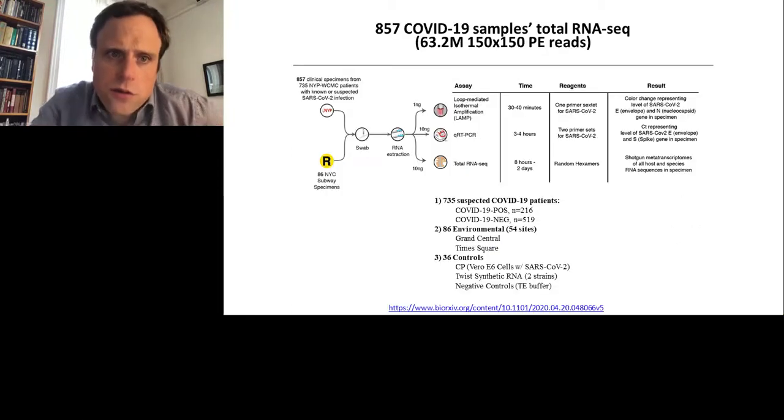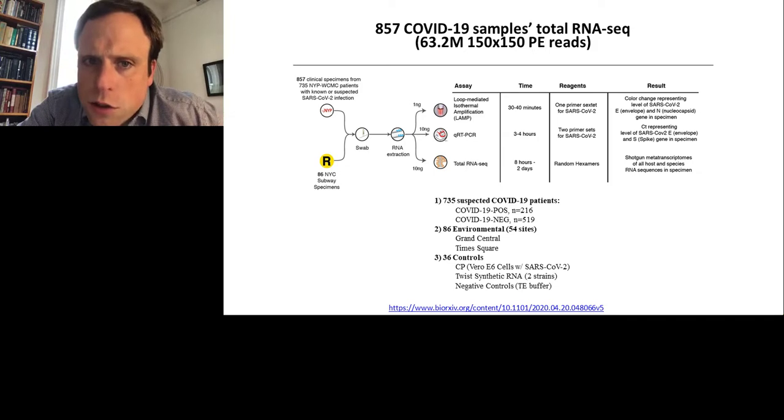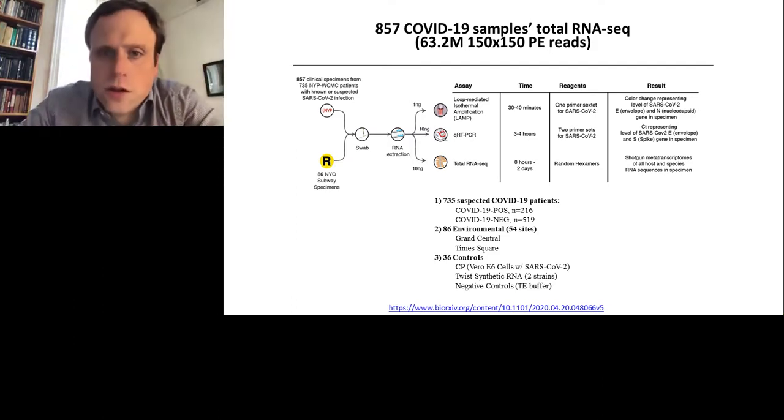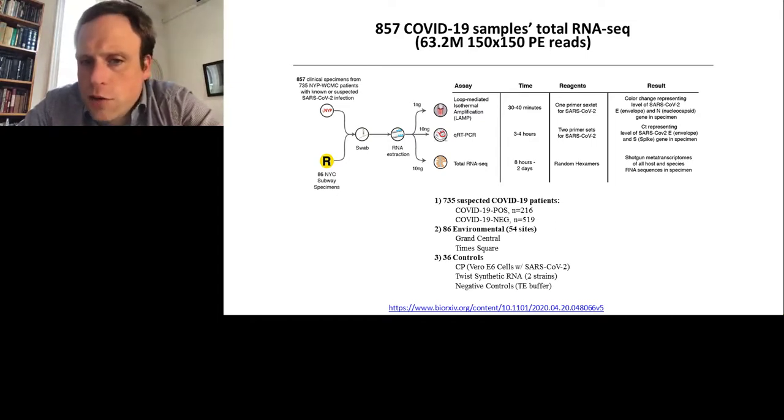So as we got the first 735 samples, we did some of them in duplicate, but we got 857 COVID-19 suspected patients sequenced to about 63 million reads for each one. And in particular, this included 216 that were confirmed positive by RT-PCR, 519 negative, and then also some environmental samples, and then a very wide range of controls, such as Vero cells and then some synthetic RNAs and controls, or just for buffer. So almost everything I'll present in the first half of the talk is on our preprint that's online. And also, there's an interactive website, which I'll show you where if people are looking for expression dynamics as a function of the virus present, we put that up there as well.